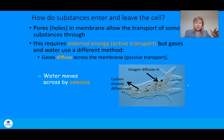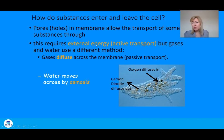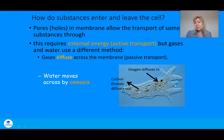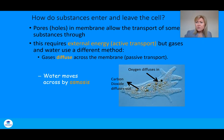How do substances enter and leave the cell? Pores allow transport of some substances through, and this usually requires active transport — external energy from ATP (adenosine triphosphate). But gases and water use a different method: diffusion and osmosis. Gases diffuse across the membrane — passive transport, meaning no extra energy is required. Amoeba is a unicellular organism where oxygen diffuses in and carbon dioxide diffuses out just through its membrane surface. Water moves by osmosis.